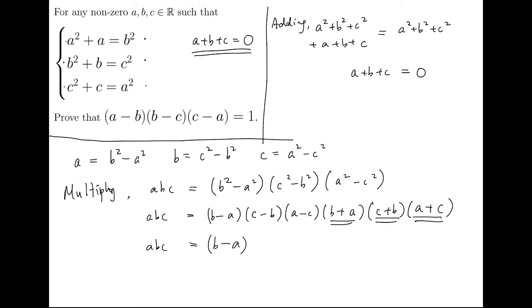So now, abc equals (b minus a) times (c minus b) times (a minus c). Notice that this part